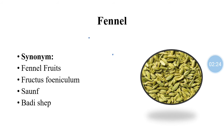Many crude drugs are available which are used as carminatives. I have taken one drug as an example — fennel — to explain the pharmacognostic study. The pharmacognostic study includes the synonym of the drug, their biological source, method of cultivation and collection, uses, and so on.